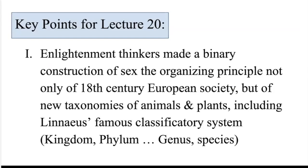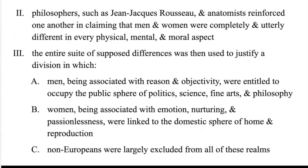Key points for Lecture 20. Enlightenment thinkers made a binary construction of sex the organizing principle — not only of 18th century European society, but of new taxonomies of animals and plants, including Linnaeus' famous classificatory system: Kingdom, Phylum, on down to Genus, Species. Philosophers such as Jean-Jacques Rousseau and anatomists reinforced one another in claiming that men and women were completely and utterly different in every physical, mental, and moral aspect. The entire suite of supposed differences was then used to justify a division in which men, being associated with reason and objectivity, were entitled to occupy the public sphere of politics, science, fine arts, and philosophy. Women, being associated with emotion, nurturing, and passionlessness, were linked to the domestic sphere of home and reproduction. Non-Europeans were largely excluded from all of these realms.